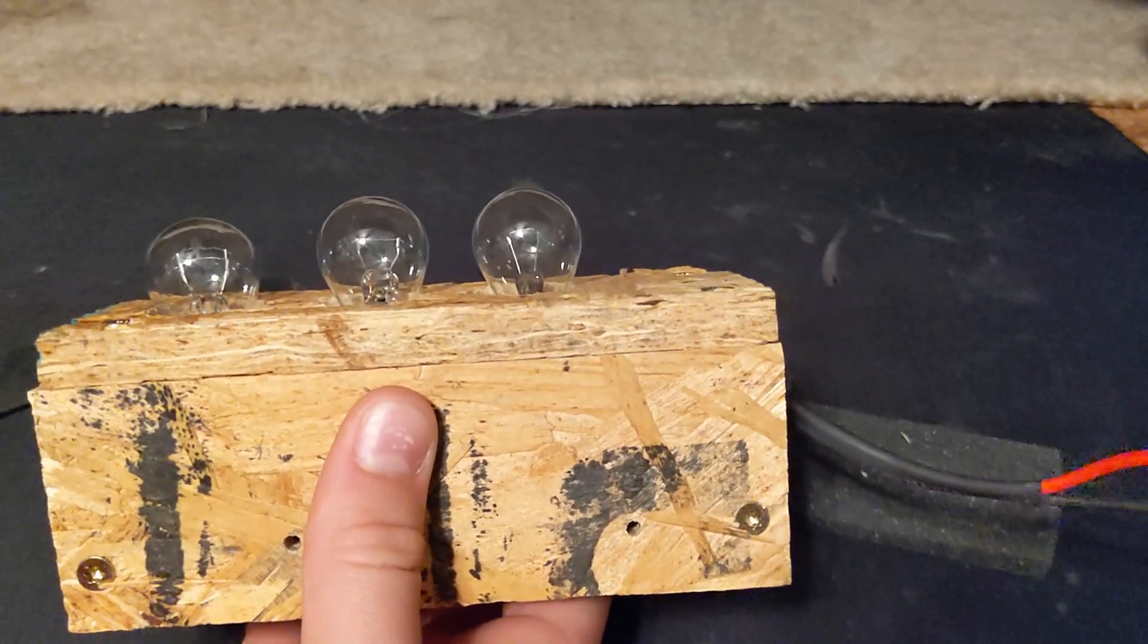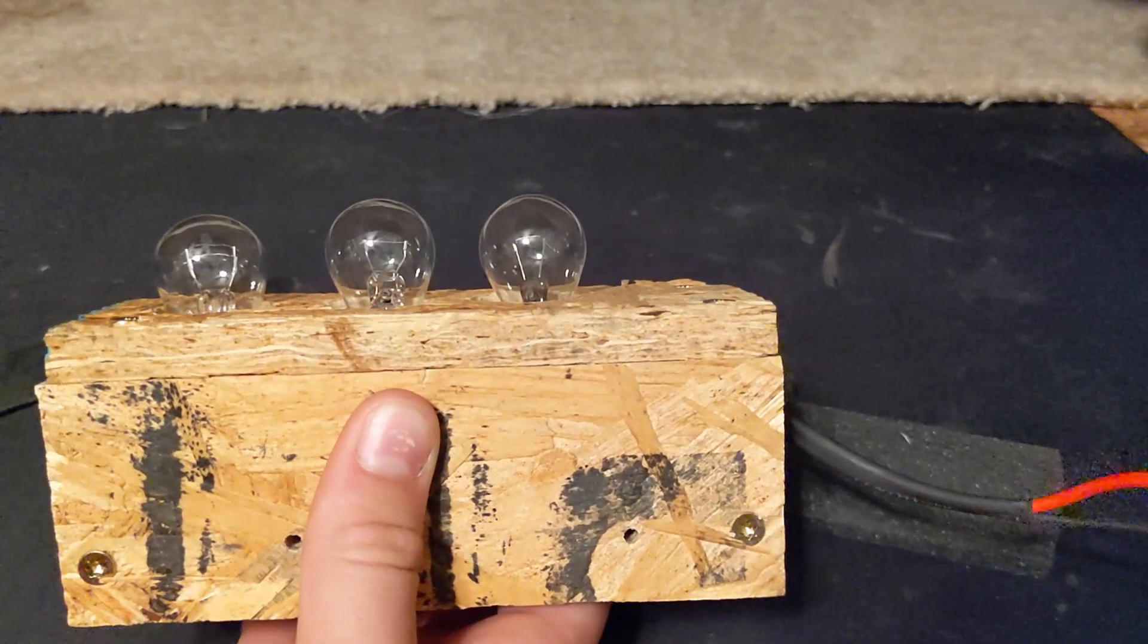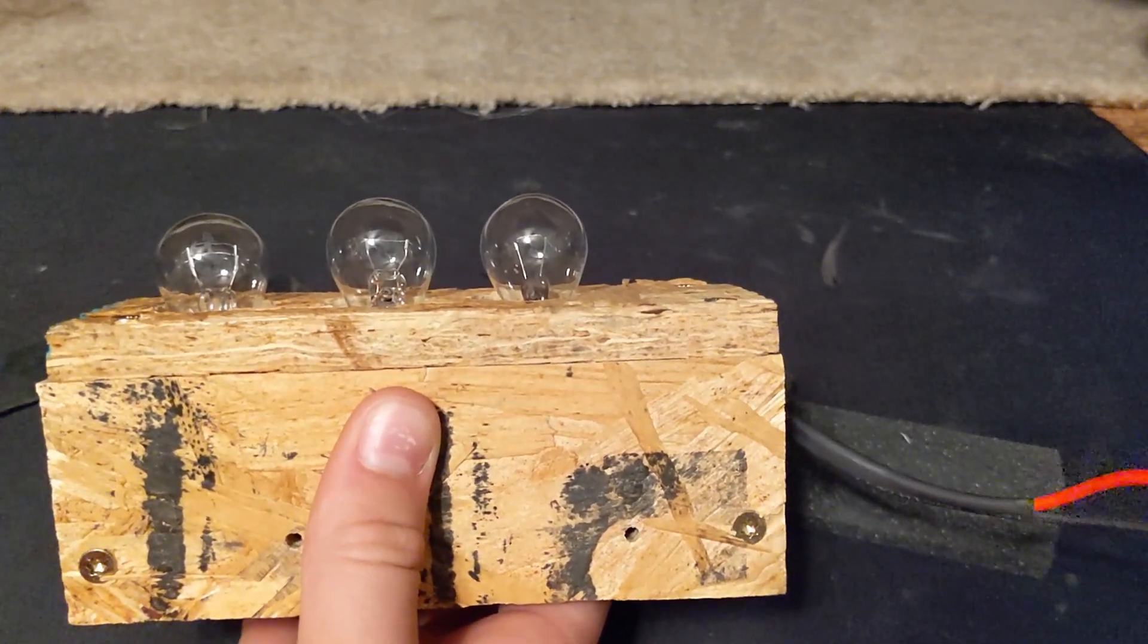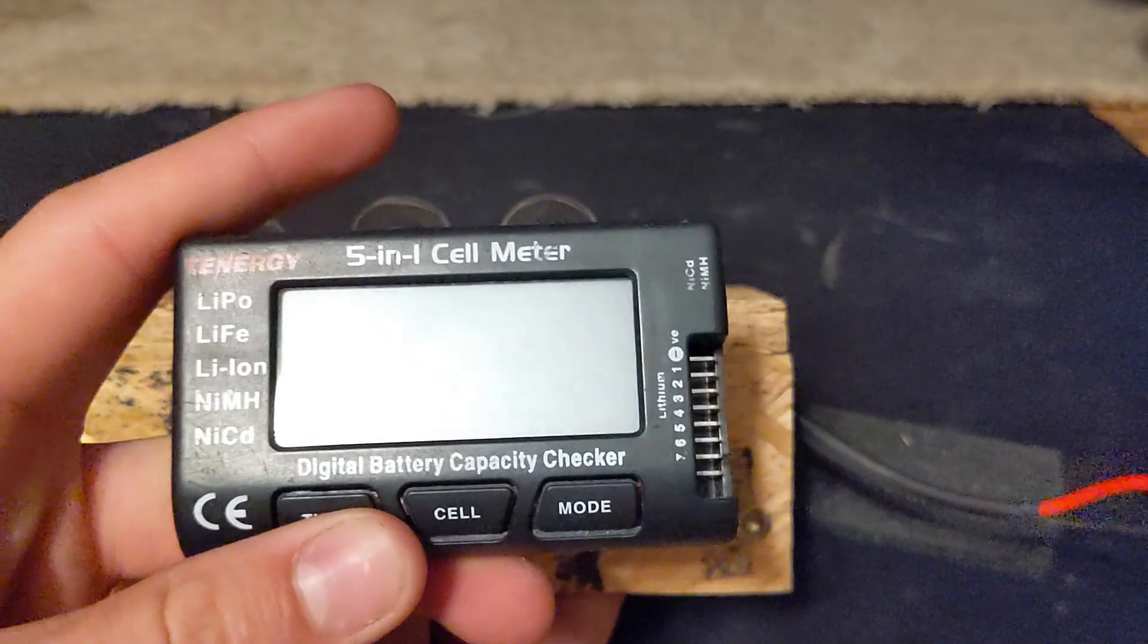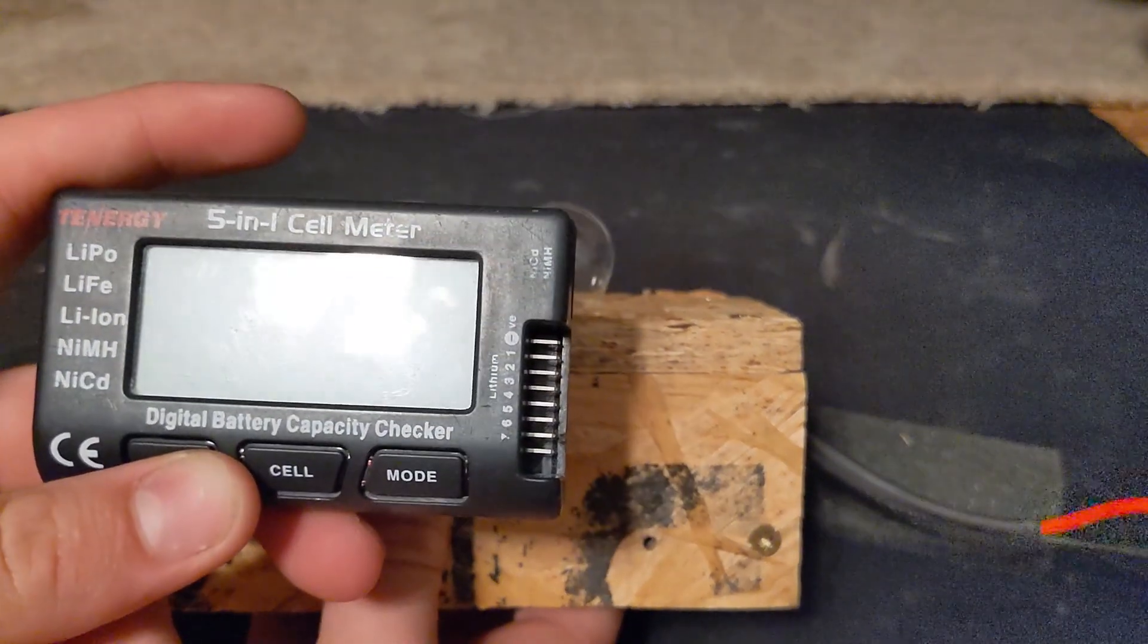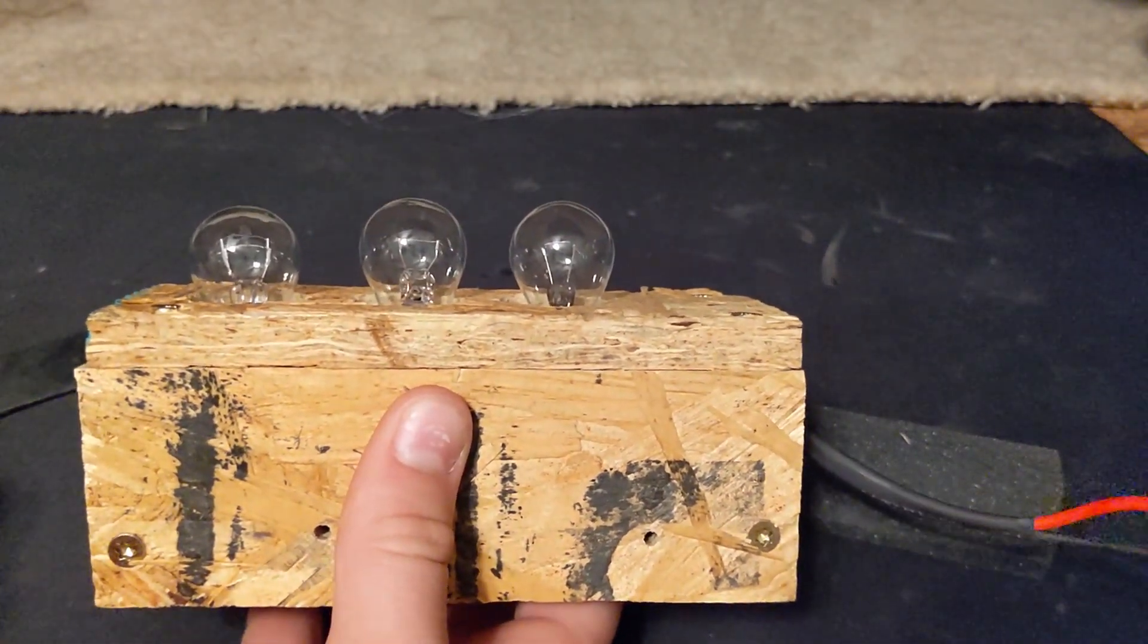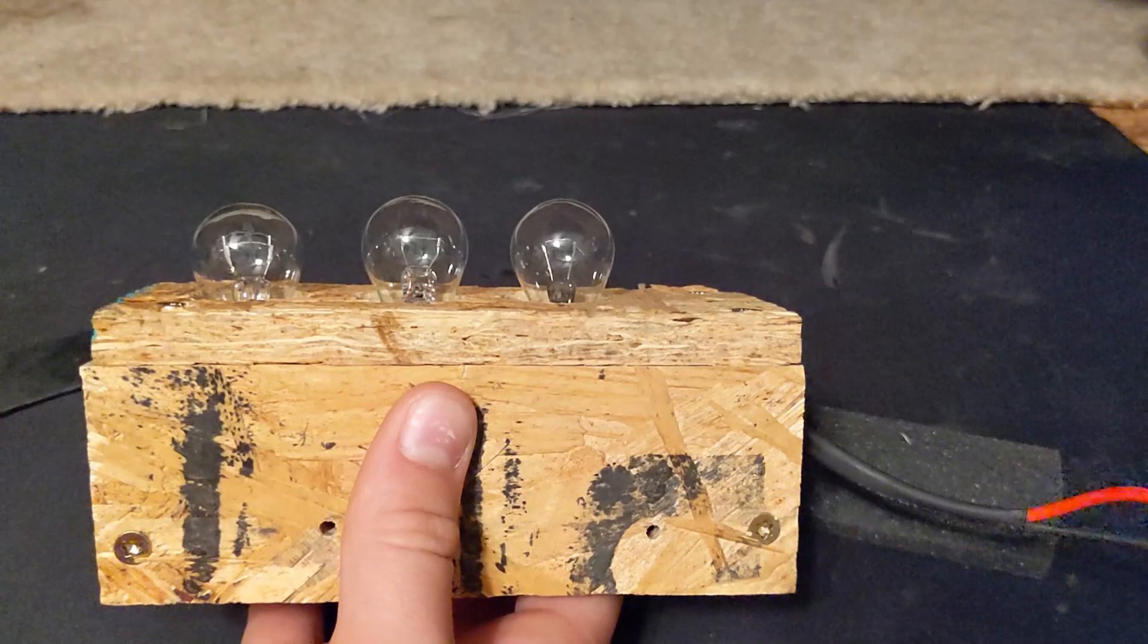You do have to watch the LiPos as you're discharging them because there is no safety cutoff. It will drain your batteries flat. Sometimes I hook this up to the balance port and then I can read the live feed from the battery, and that way I can make sure that it doesn't under or over discharge.